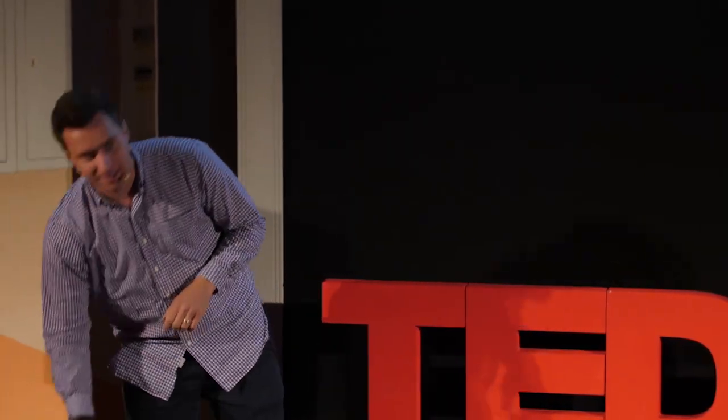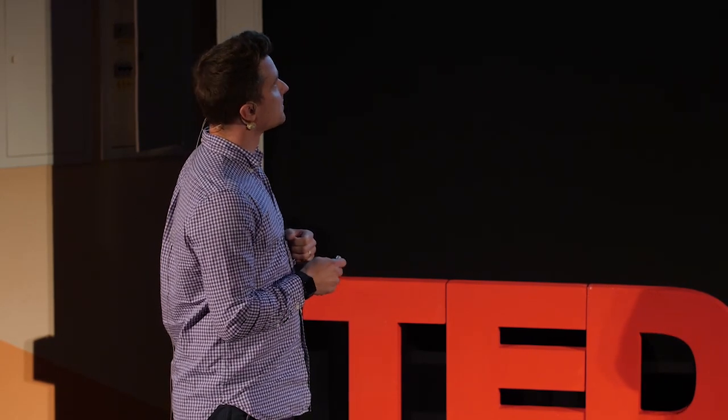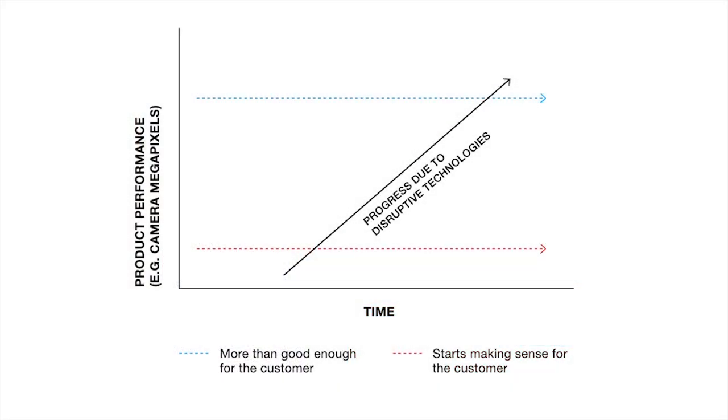There is something very interesting about disruptive technologies. Initially, when they're introduced to the consumer market, they don't make a lot of sense. They start with very poor performance — like a digital camera would have very low resolution. The number of megapixels was so low that back in the days when it was introduced, if you made a photo and put it on an old CRT display, you could barely see what was in the picture. So initially, those technologies don't spark a lot of enthusiasm from customers.